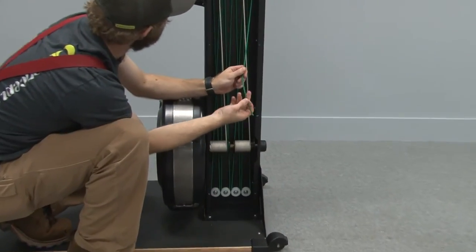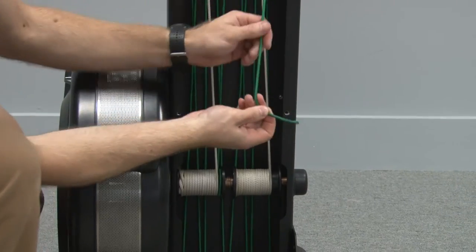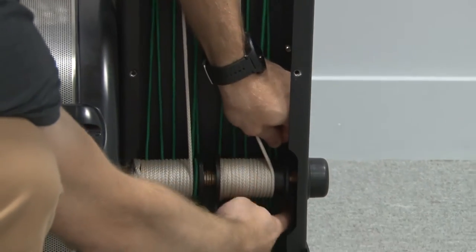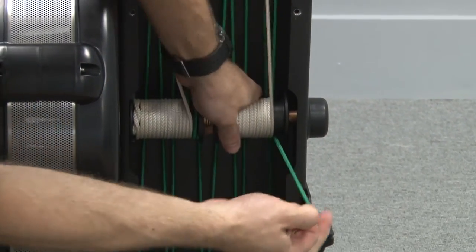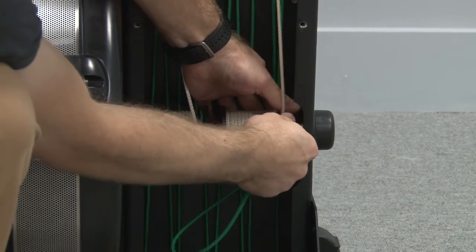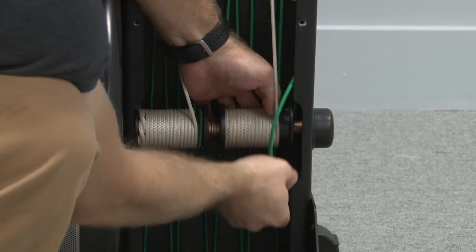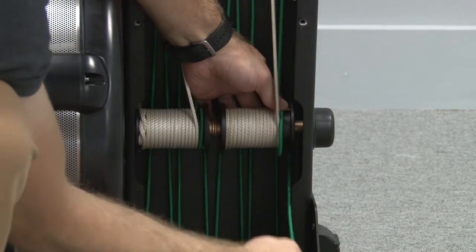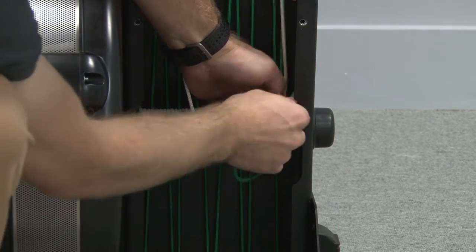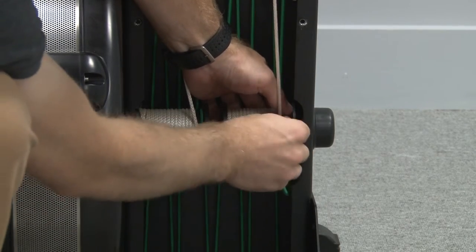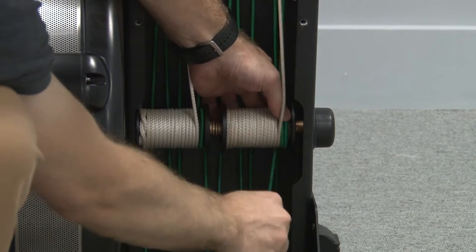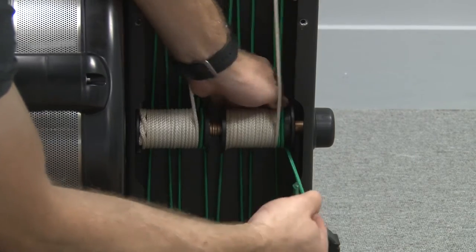Once you have the bungee routed over all of the pulleys, we'll wrap it on the spool. Send the green bungee behind the spool first and we want to get two wraps of the bungee, so we send it around the spool once and then a second time. Once it's around the spool twice, we'll tie the knot in the end.